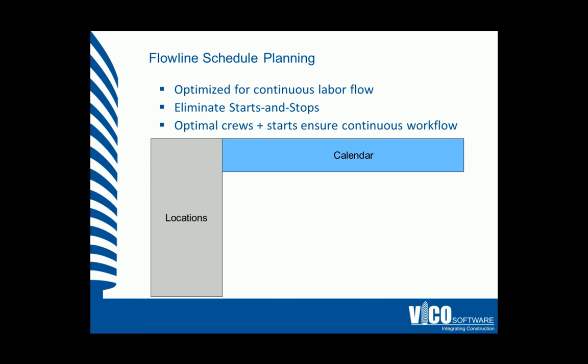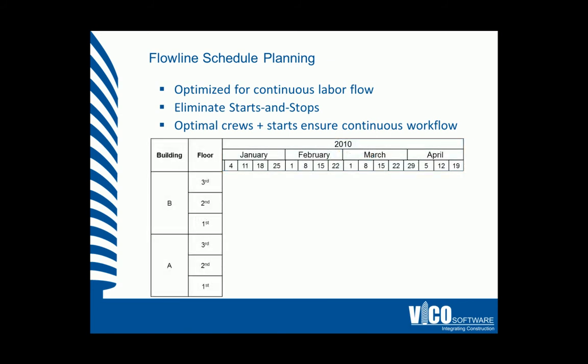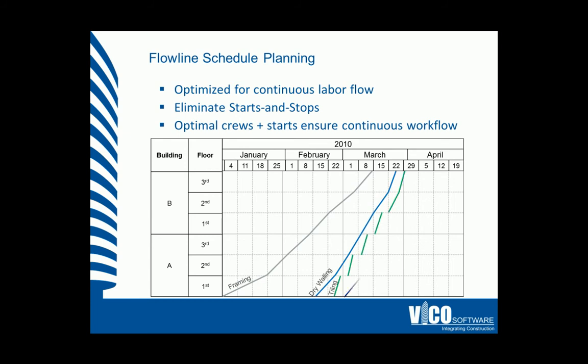As we discussed in the Level 4 vignettes, on the left-hand axis we have the location hierarchy. In the top row we have the calendar. We can then track each activity through each location over a time span. We have four activities here: framing, drywalling, tiling, and priming and sealing. As you can see, the green tiling activity starts and stops. This introduces risk to the schedule through demobilizations and mobilizations of this crew. We also have additional waste between the framing and drywalling activity. This waste is a cause of location and time delay that could be absorbed by crews working within this time span.